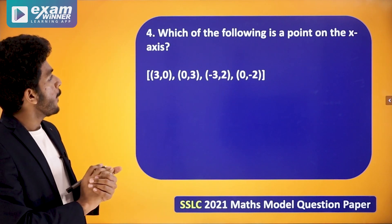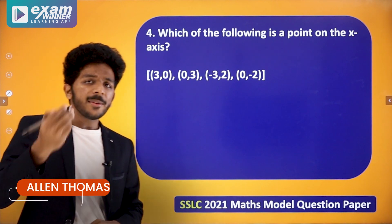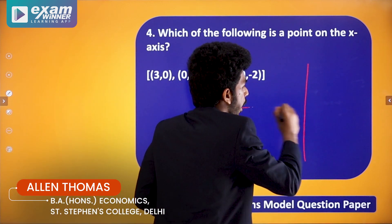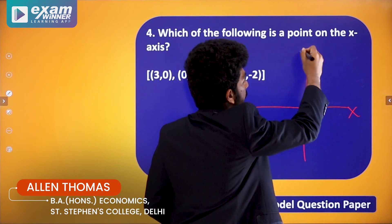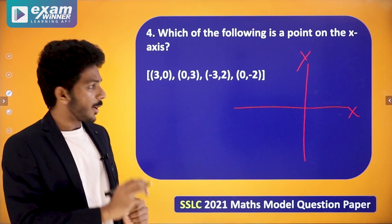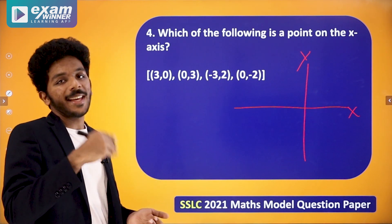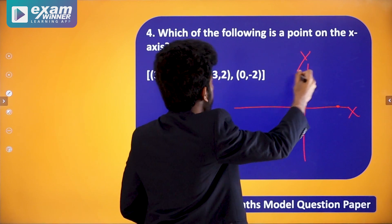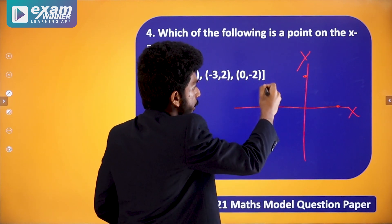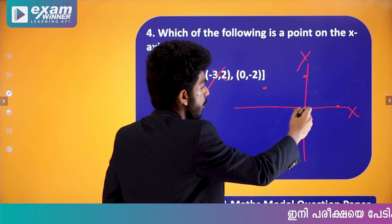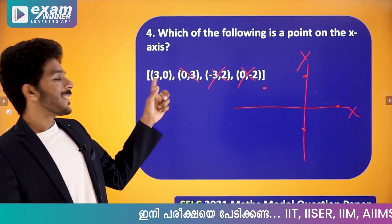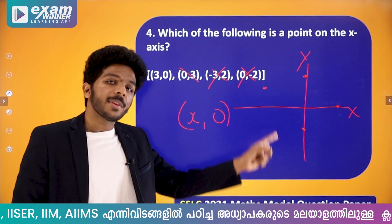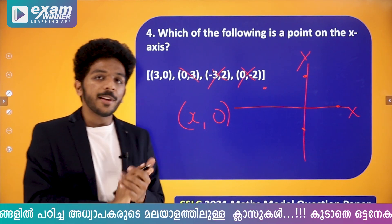Let's go to the fourth question: which of the following is a point on the x-axis? A point on the x-axis has the form (x, 0) — the y-value is 0. So (3, 0) is a point on the x-axis. Points like (-3, 2) or (0, -2) are not on the x-axis. If the point is on the x-axis, y must equal 0.